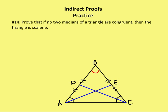The question is: prove that if no two medians of a triangle are congruent, then the triangle is scalene. In an indirect proof, we're going to take the assumption that what we're trying to prove is not true. We're going to use the givens that are provided to us, and then we're going to show by contradiction that our assumption about the prove statement not being true cannot possibly hold because of a contradiction in what's given.